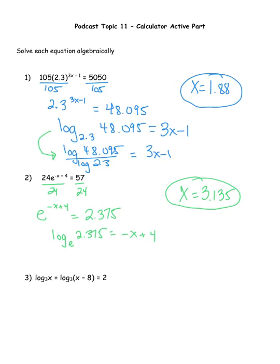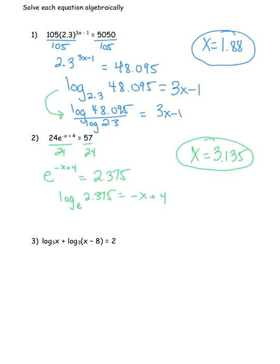You can always check your answer by plugging it back in for x. Now moving on to question number three — which is not an exponential equation. Questions one and two cover everything exponential equations can do. Question three is a logarithm equation, and I'll be using some properties of logarithms. The first property: the sum of two logs with the same base can be written as a single log. So log base 3 of x plus log base 3 of (x − 8) becomes log base 3 of [x(x − 8)] = 2.